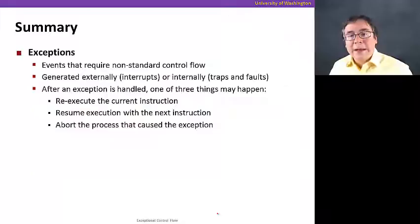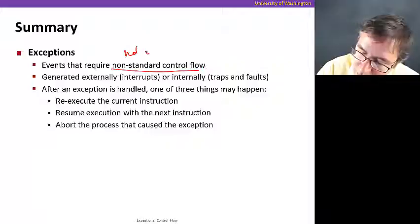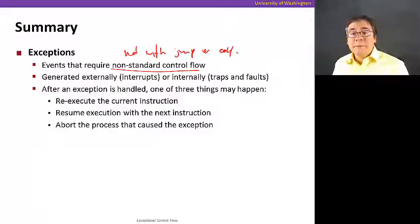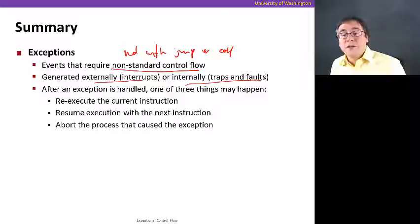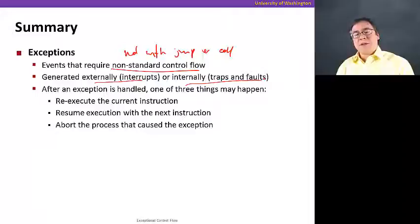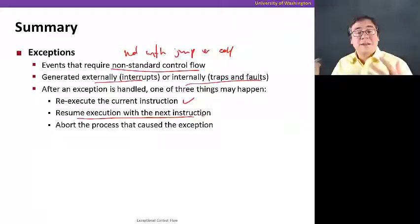To summarize, exceptions are events that require non-standard control flow — not just jumps or calls. They're typically generated externally in the case of interrupts, or internally in the case of traps and faults. The exception is handled by the operating system, and when the OS handles the exception, one of three things happens: it re-executes the current instruction (as in page faults), it resumes execution with the next instruction (as with traps like opening or reading/writing a file), or it aborts the process if the exception is unrecoverable.